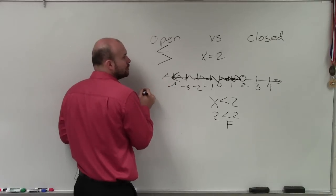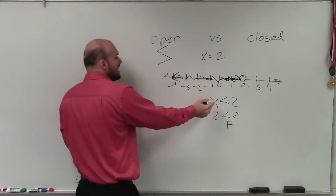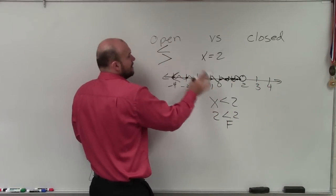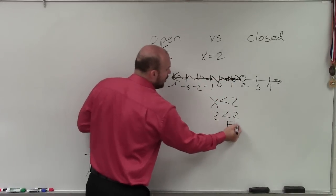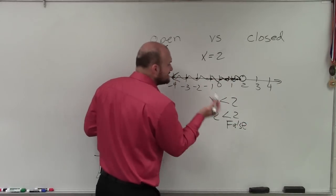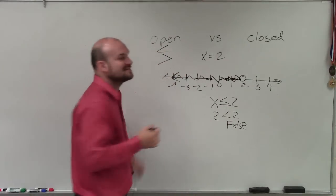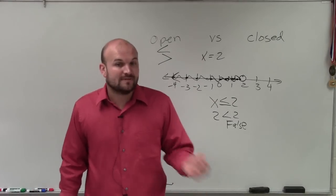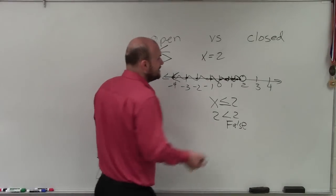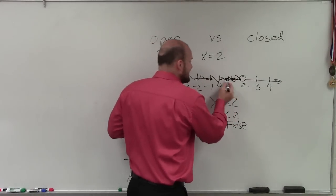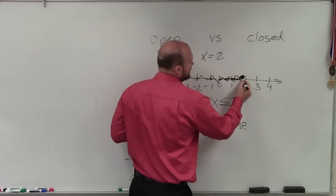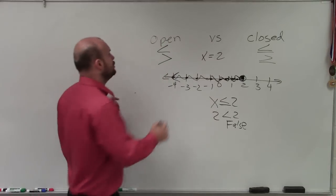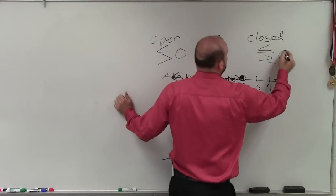Any time it's less than or greater than — so even if I rewrote this as x is greater than 2 and we shade it to the right — any time less than or greater than is always going to be open because it's false at that point. However, if I say x is less than or equal to 2, that means the values can be less than 2 or they can also be equal to 2. In that case, 2 is equal to 2, and any one of these points is all less than 2. So any time you have less than or equal to, or greater than or equal to, you're going to have a closed dot.